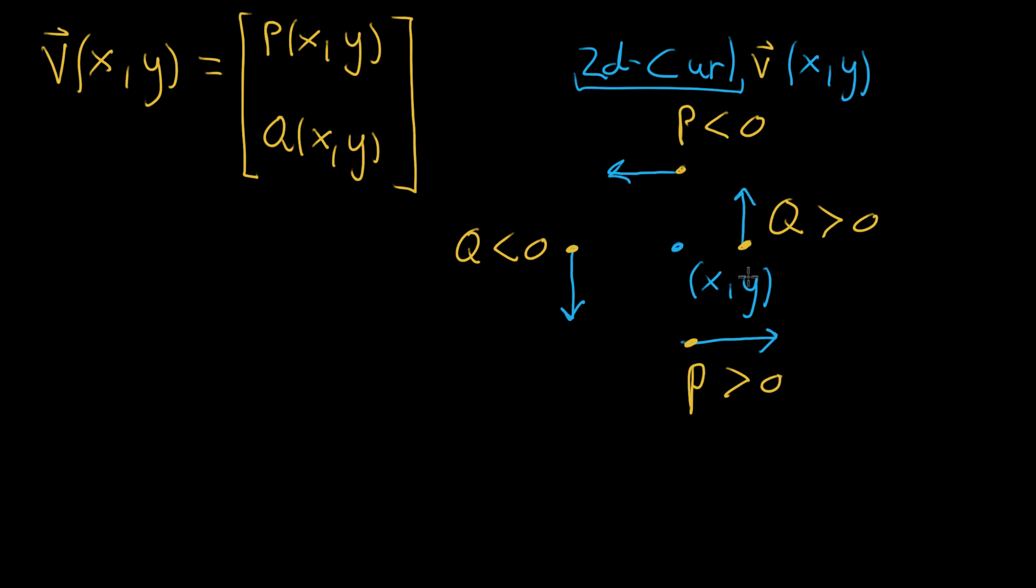So this is just the very specific, almost contrived scenario that I'm looking at. And I want to say, if this should have positive curl, maybe if we look at the information, the partial derivative information to be specific, about P and Q in a scenario like this, it'll give us a way to quantify the idea of curl.